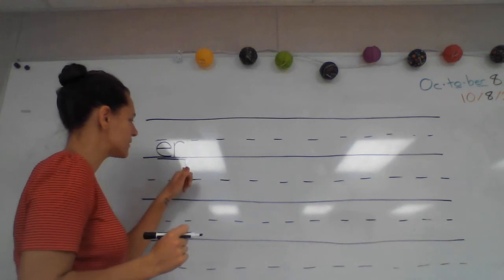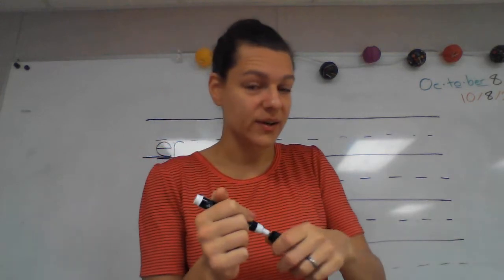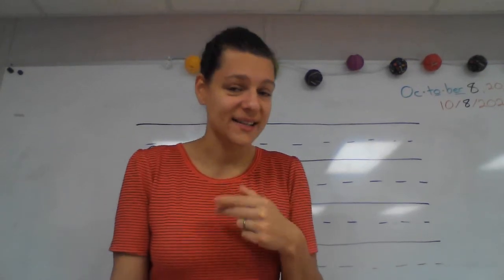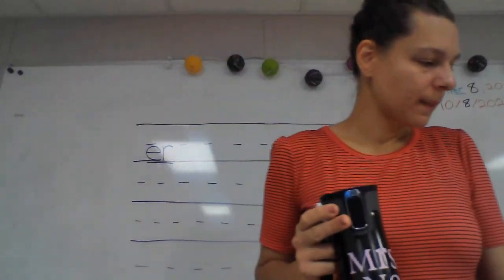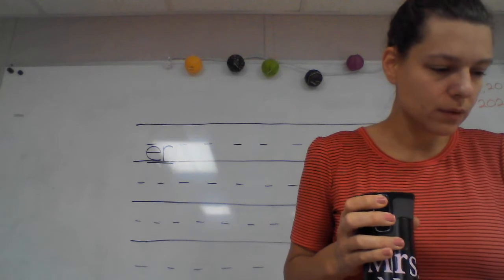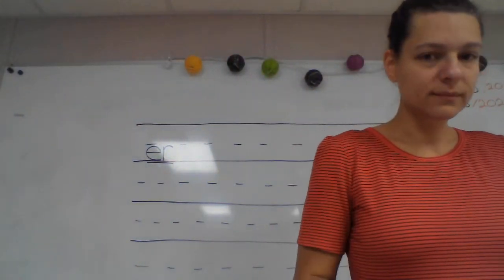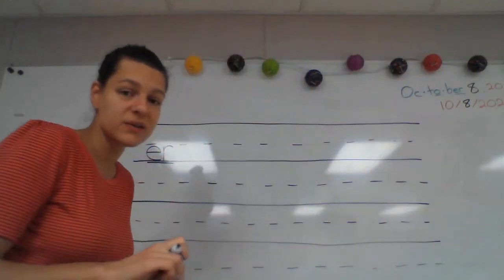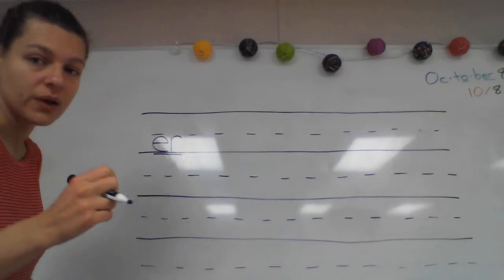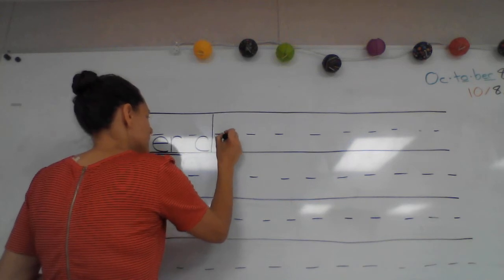The next one is 'ck,' two-letter ck, used only after a single vowel that says its short sounds. What are you going to write? Good. Ck, two-letter ck. Write it and say it while you write it. Alright, put your finger under the phonogram you just wrote. What is it? Good. Ck, two-letter ck, used after a single vowel.